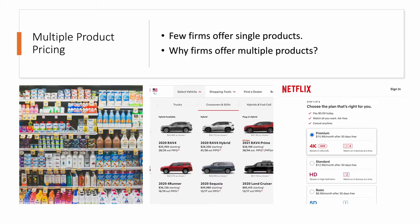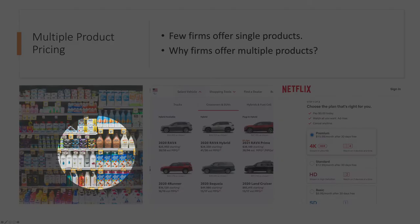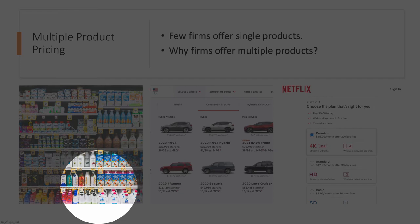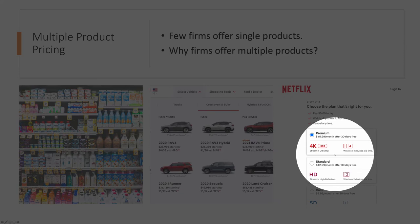From our everyday life, we see that very few firms actually offer a single product. Most firms would offer multiple products into the market. Here are a few examples: in a grocery store, we see different types of drinks; Toyota offers different car models; and Netflix offers video packages at different resolutions.